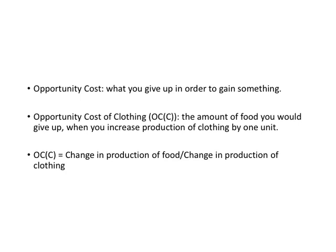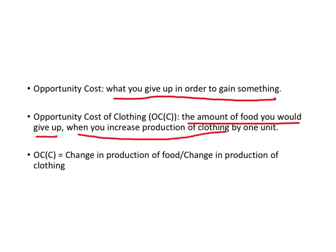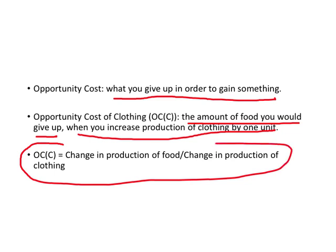In general terms, opportunity cost is what you give up in order to gain something. In our example of the country Beautiful, which produces both clothing and food, the opportunity cost of clothing is the amount of food you give up when you decide to have more clothing. More formally, opportunity cost of clothing is the amount of food you give up when you increase production of clothing by one unit. We can measure this precisely as: change in production of food divided by change in production of clothing.